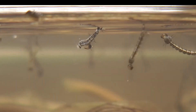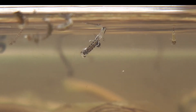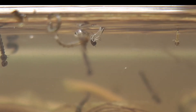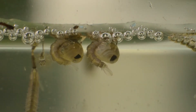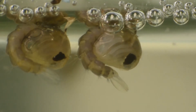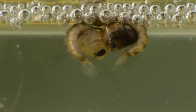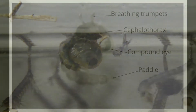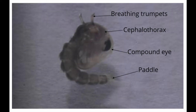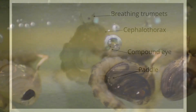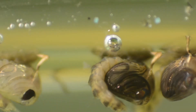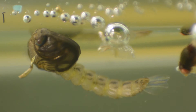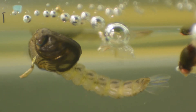After the fourth larval instar completes its development, it molts into a non-feeding but highly mobile stage called the pupa. Within the body casing of the pupa, the immature tissues are breaking down and adult tissues are forming. The pupa on the right is more advanced than the one on the left, the darker of the two. The pupa breathes through a pair of tube-like organs or trumpets, situated at the head end of the comma-shaped body. Once the adult tissues have developed and it's time for emergence, the pupa swims to the surface and stretches itself out full length.